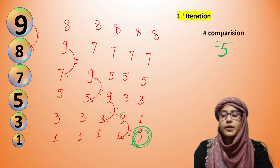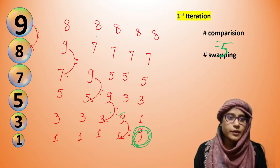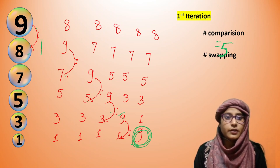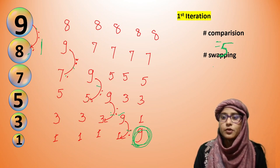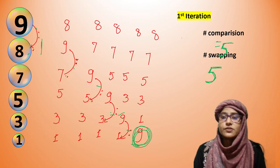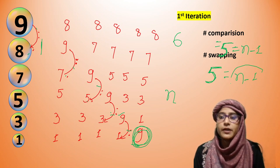Now let's check how much swapping happened. Swapping: 9 and 8 — swapping here. Again, 9 and 7 swapping, and swapping 3, 4, and 5 times. So the number of swappings is 5. That means our total number is 6 elements, so comparisons = n−1 and swappings = n−1. This is our first iteration.